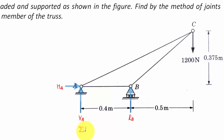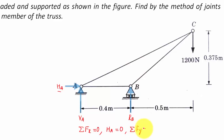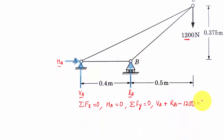What we're initially going to do is find the magnitude of HA, VA, and RB using the equations of equilibrium. Summation of all forces in the x-direction equals zero — the only force is HA, so HA equals zero. Then, summation of all forces in the y-direction equals zero: VA plus RB minus 1200 equals zero, giving us equation number one: VA plus RB equals 1200.